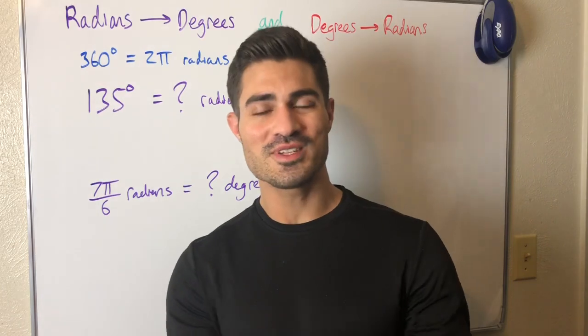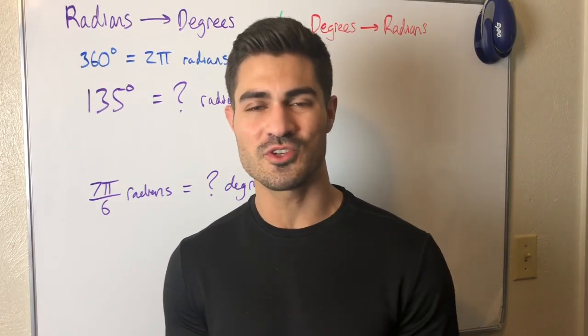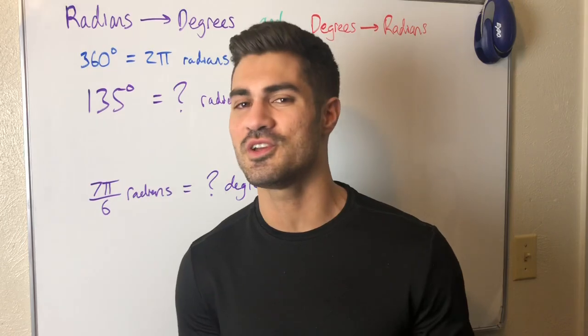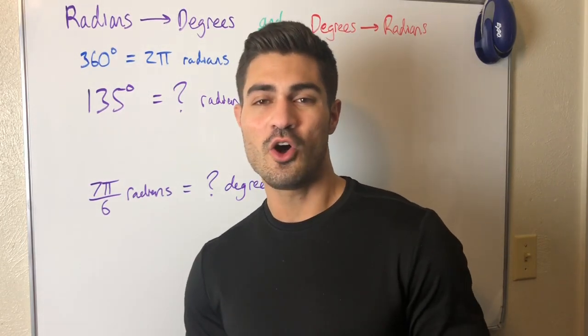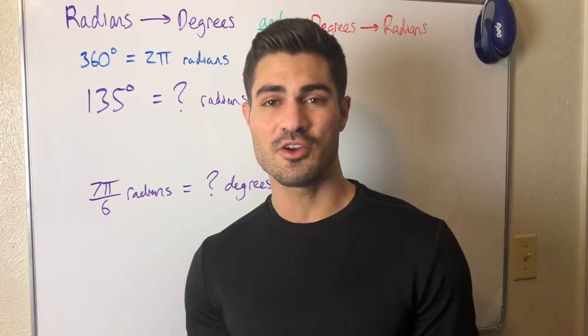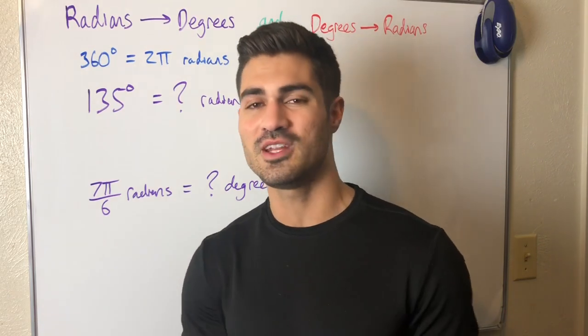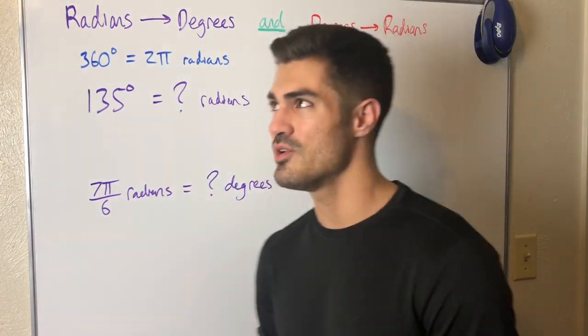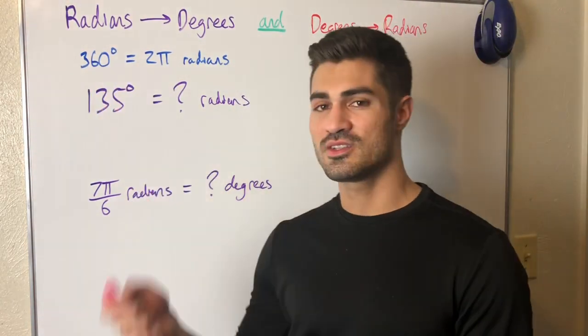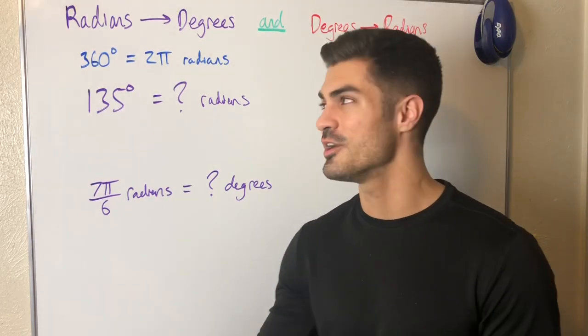Before we can talk about angles and trigonometric functions and all this stuff, we need to talk about how angles are measured. Usually up to this point all you've seen is degrees, and now you're being introduced to radians. So now we need to learn how to convert between degrees and radians and radians and degrees. We know that 360 degrees is a full rotation around a circle, and this is equal to 2π radians.